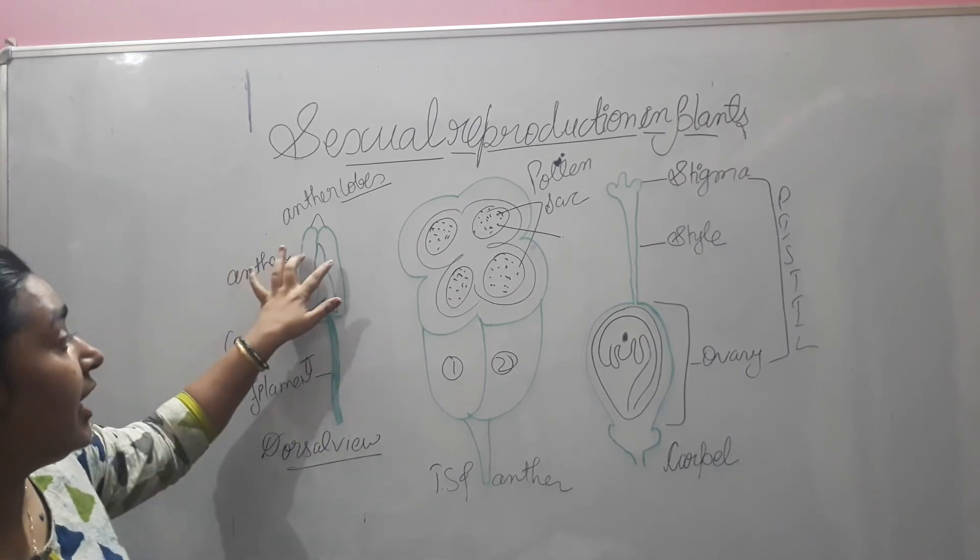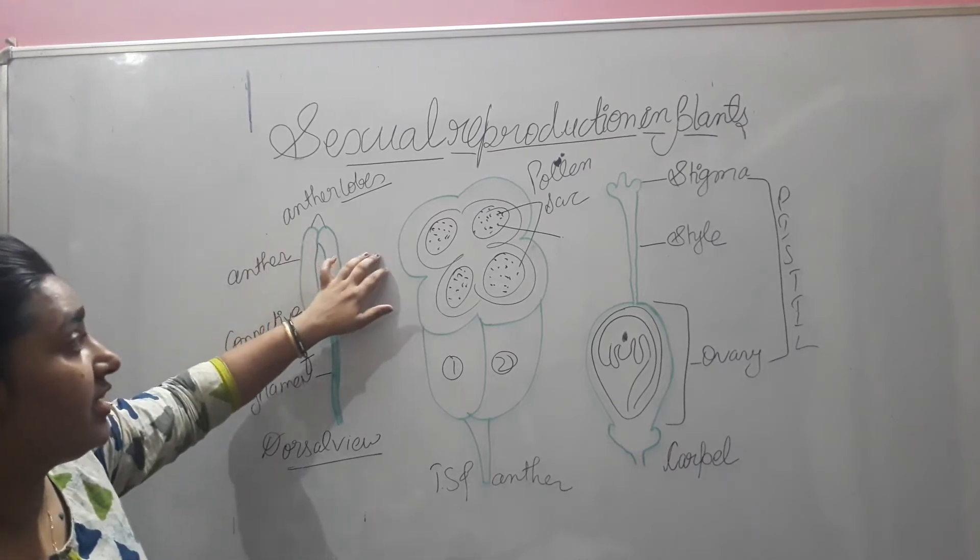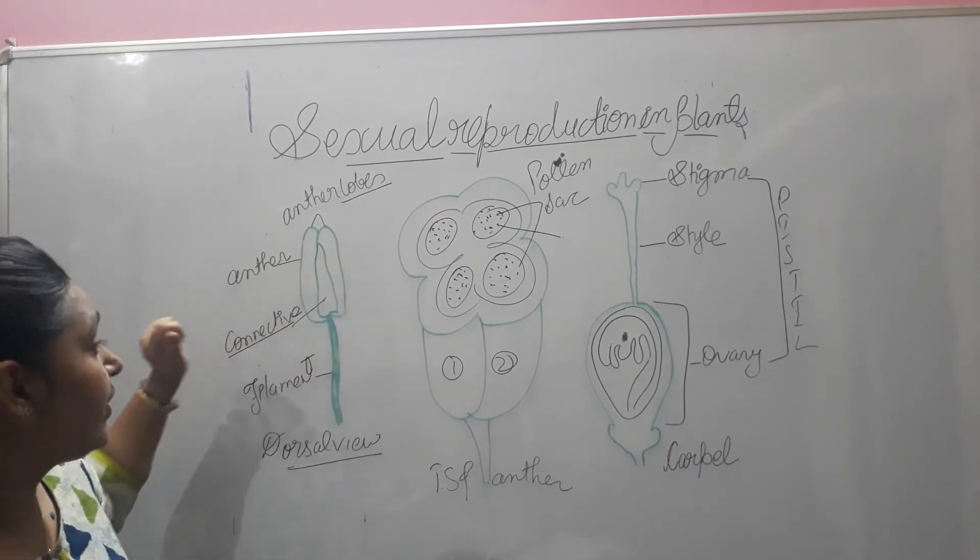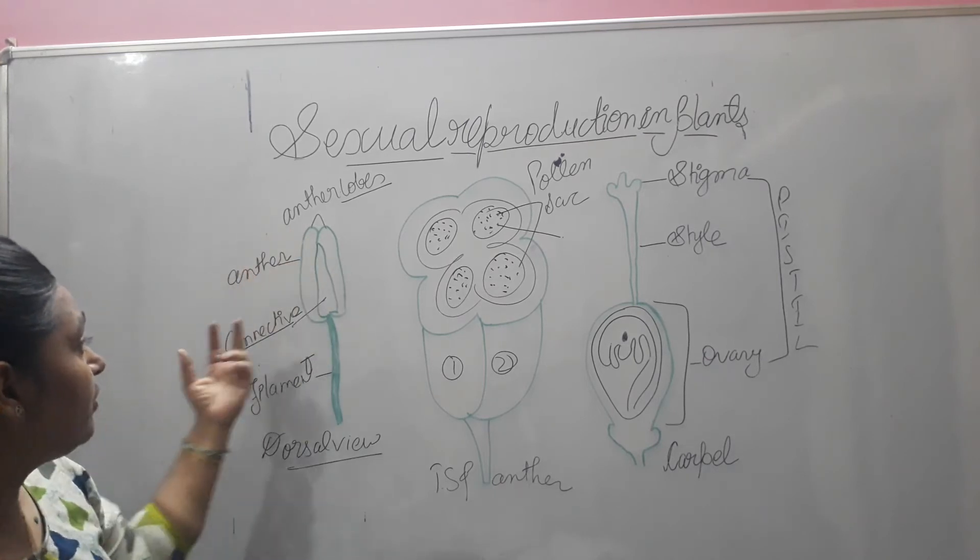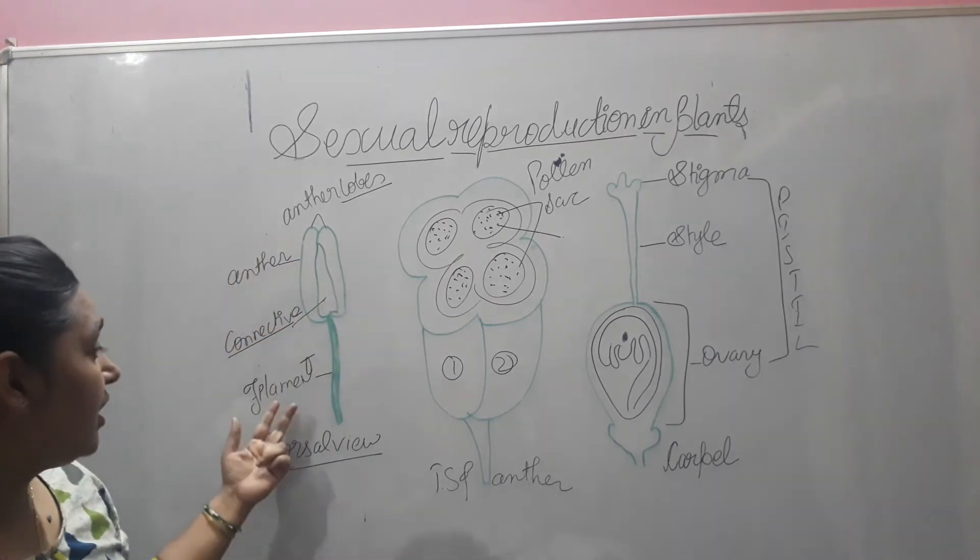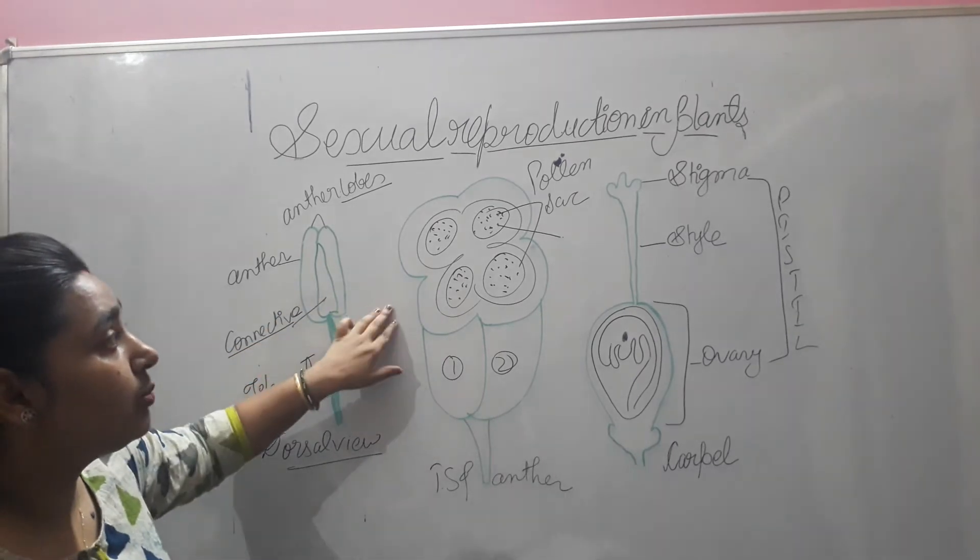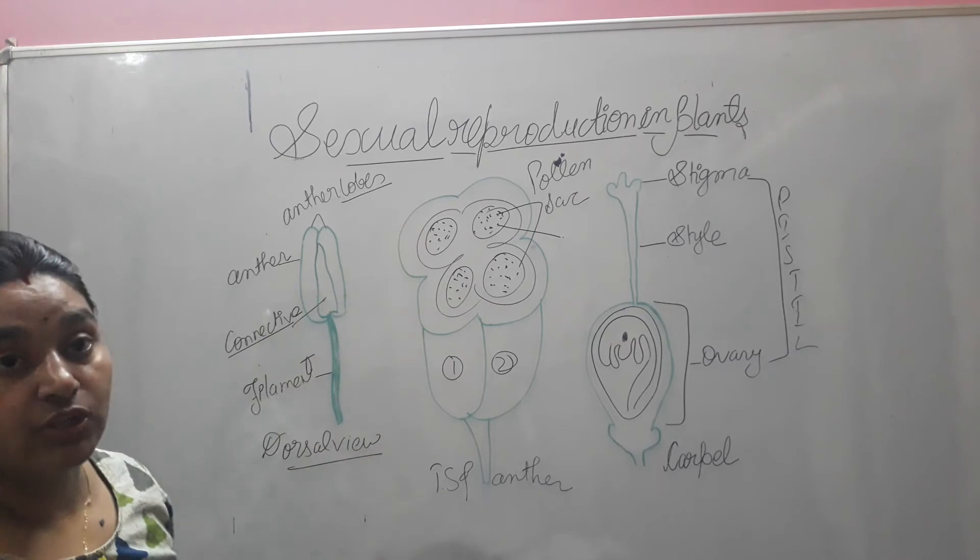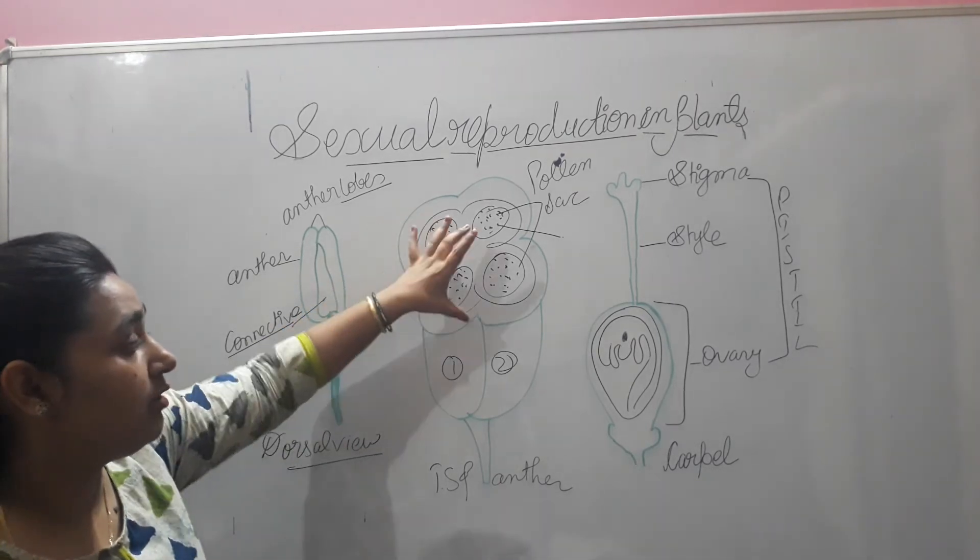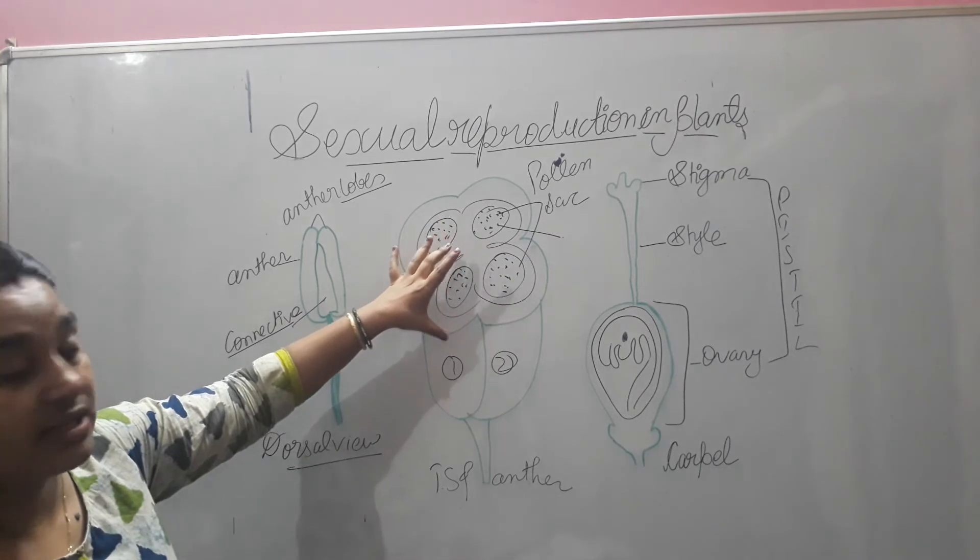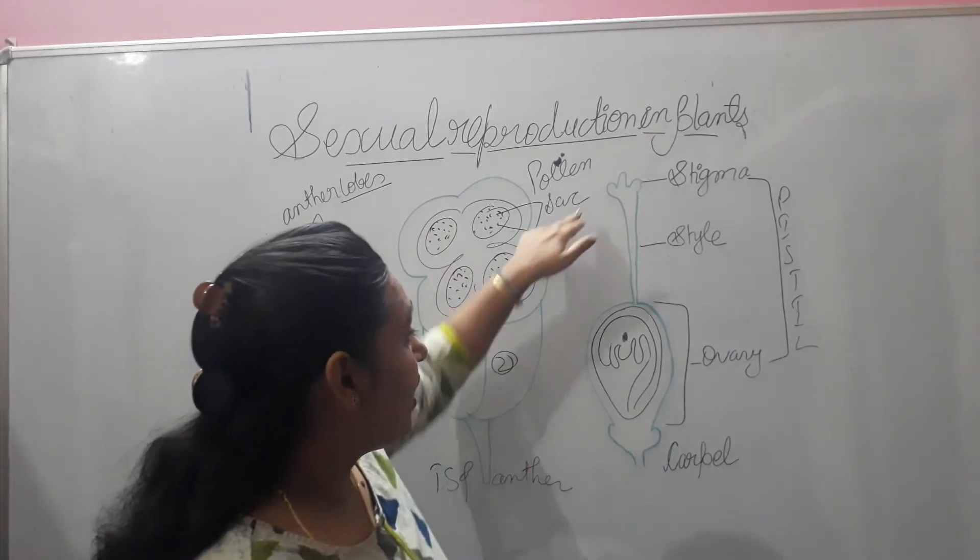This is the structure of the male reproductive part of a flower. The anther is bilobed and has a powdery substance called pollen inside that is yellowish in color. The connective tissue in between joins these two lobes and is attached with the filament. When you cut this lobe, you will see that each lobe has one pair of sacs, so there are total four pollen sacs and two lobes.